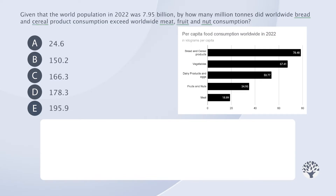Let's have a look at the table. The table shows the per capita consumption of multiple categories of food. Based on the question, we need bread and cereal products, which is 78.48, fruits and nuts, which is 34.95, and meat, which is 18.89.